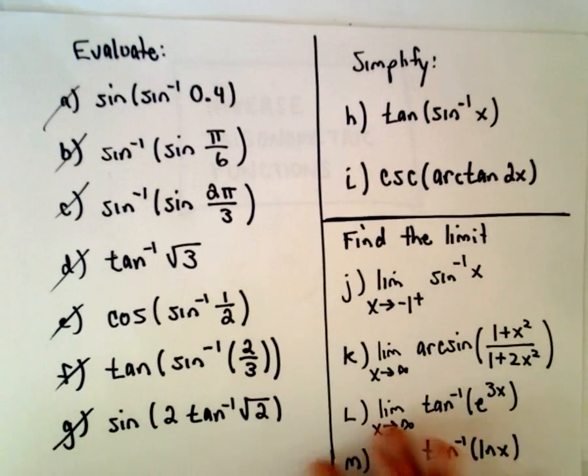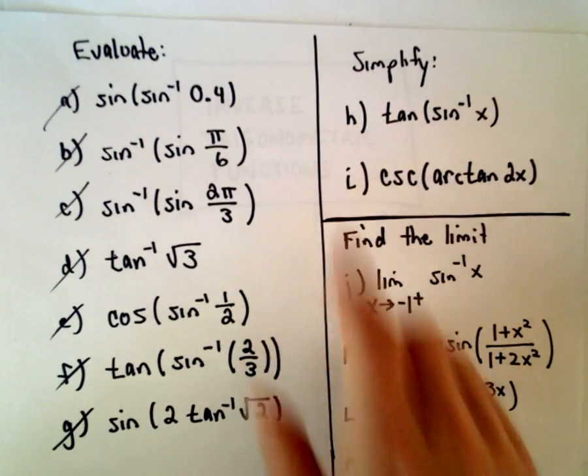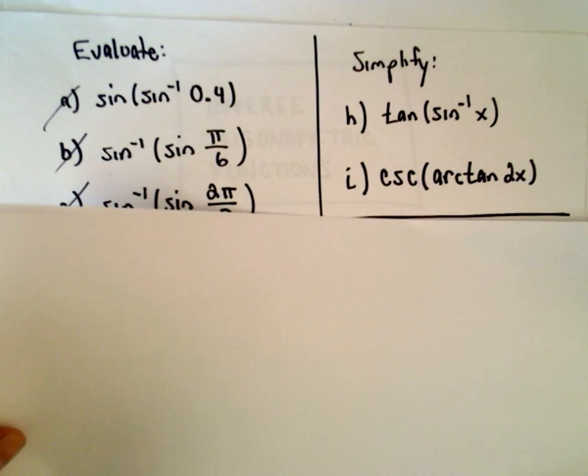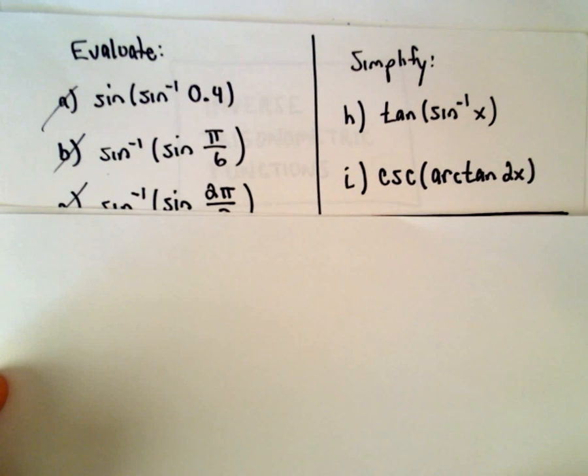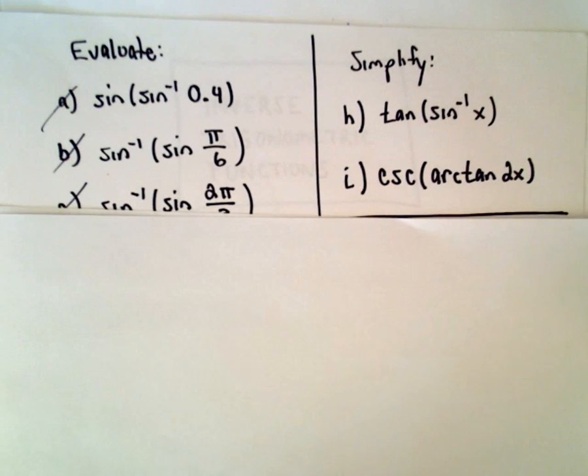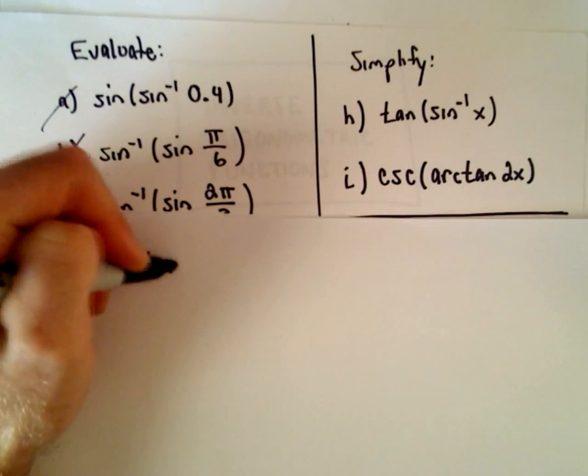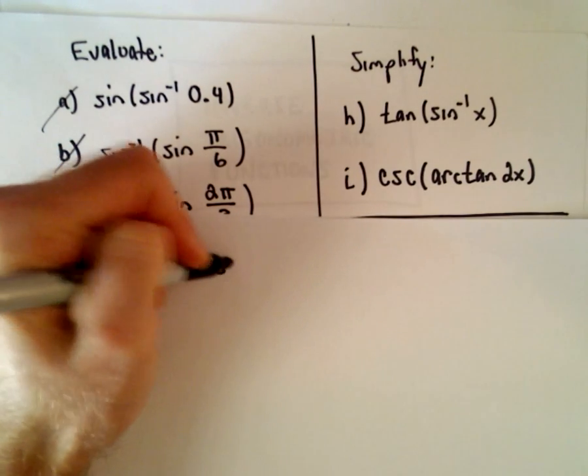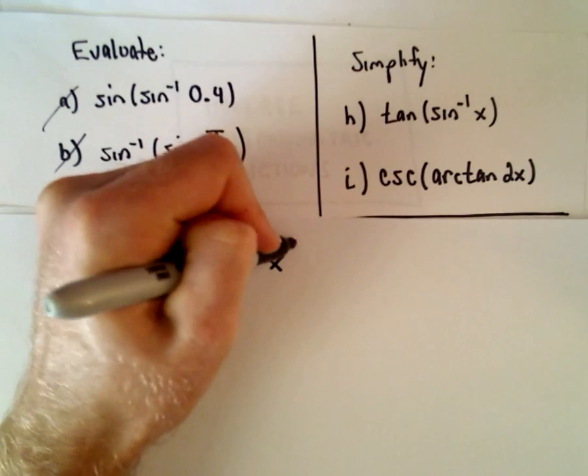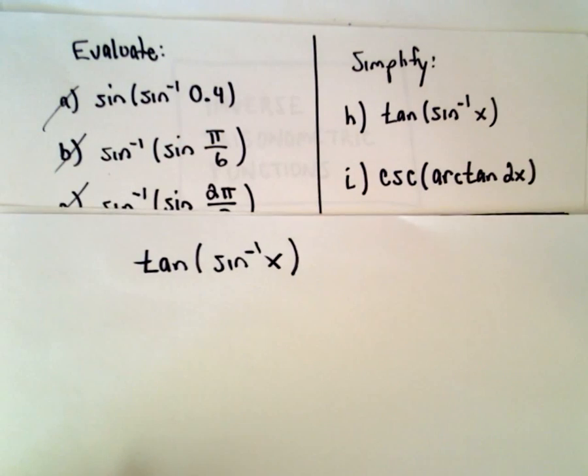In this video I'm going to simplify the expressions in part H and part I. Typically when people say simplify these, they want you to rewrite them so that there's no trig functions involved. So that's what we're going to do, in the same way that we did our last examples. We're simply going to bring in right triangles.